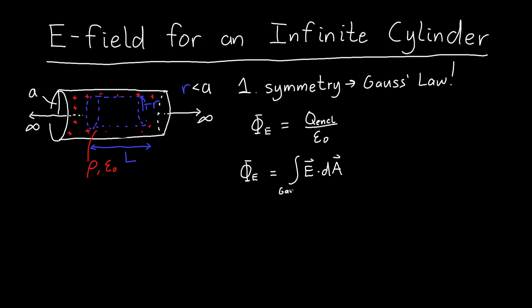In particular, the electric field that's pointing out of our Gaussian surface—this is over our Gaussian surface—and in this case because we have cylindrical symmetry our electric field is pointing straight out.